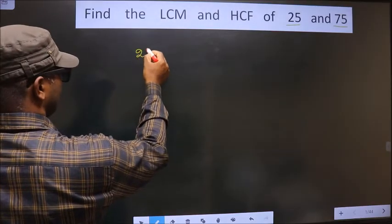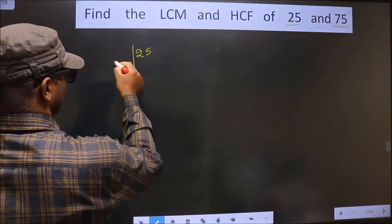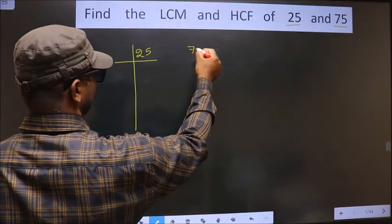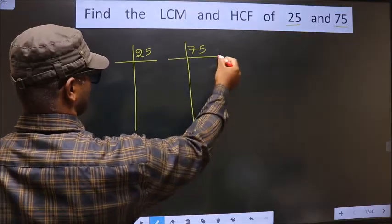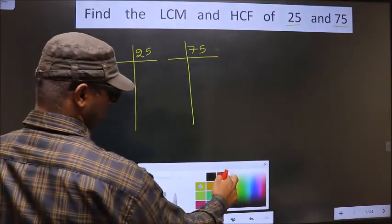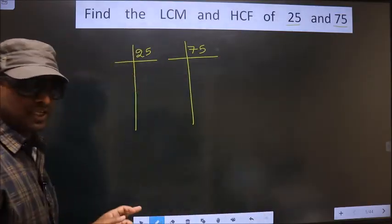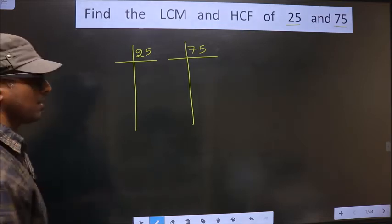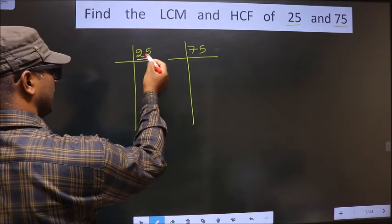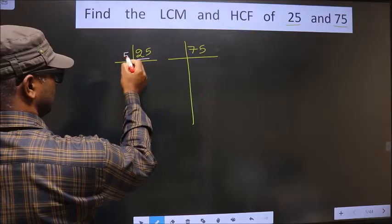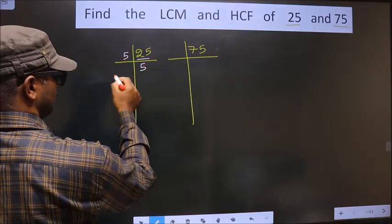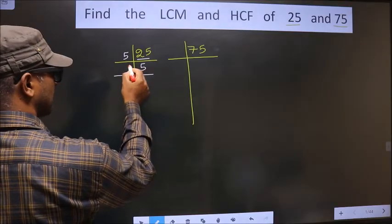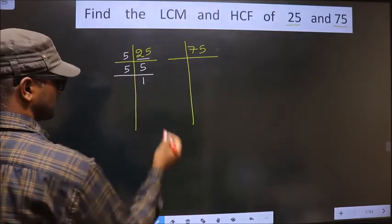25, 75. Here we have 25. 25 is nothing but 5×5 is 25. Now 5 is a prime number, so we take 5 once 5.